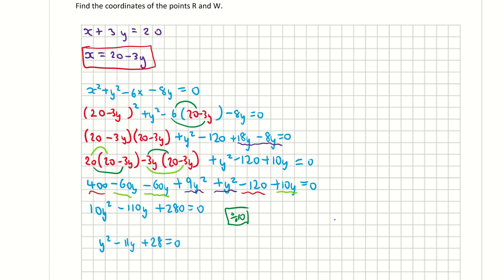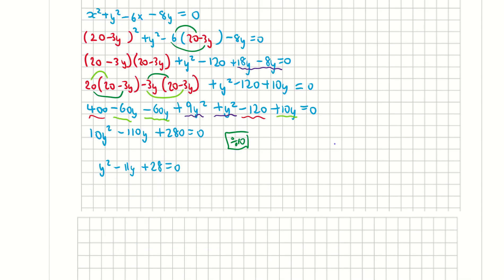I need to factorize my quadratic. I could use the quadratic formula, or I'm just going to use the two brackets method here. I'm looking for two numbers that multiply to 28 and add to negative 11. That's going to be minus 7 and minus 4. So now I'm going to solve those: y - 7 = 0 means y = 7, and y - 4 = 0 means y = 4.